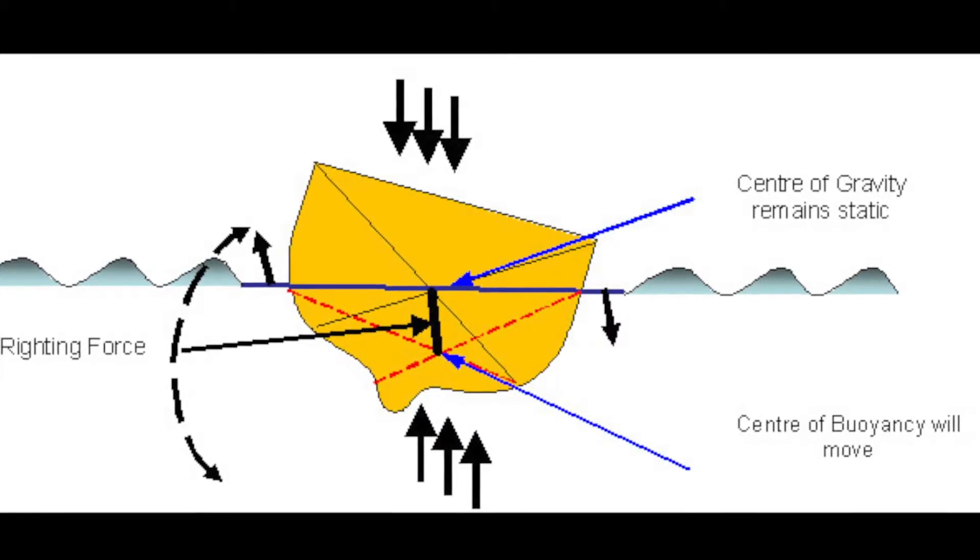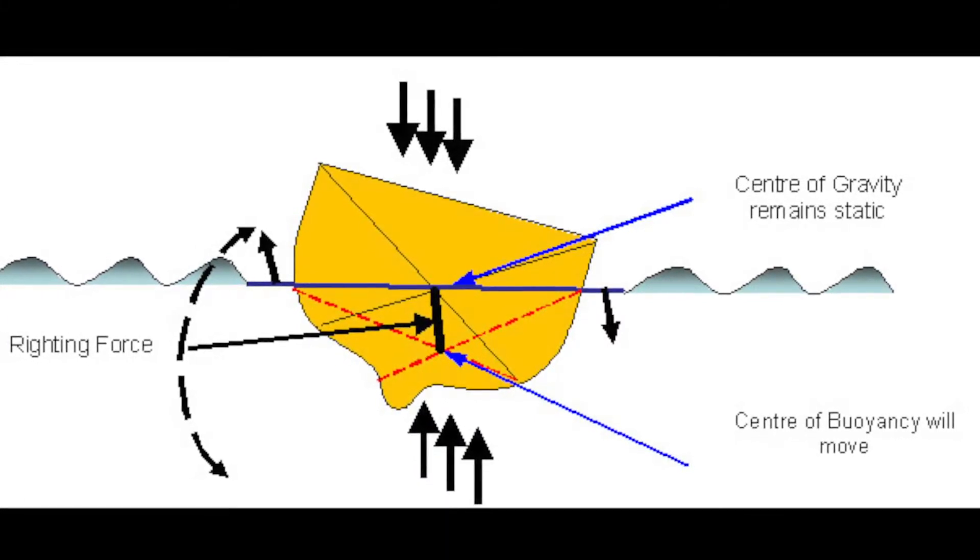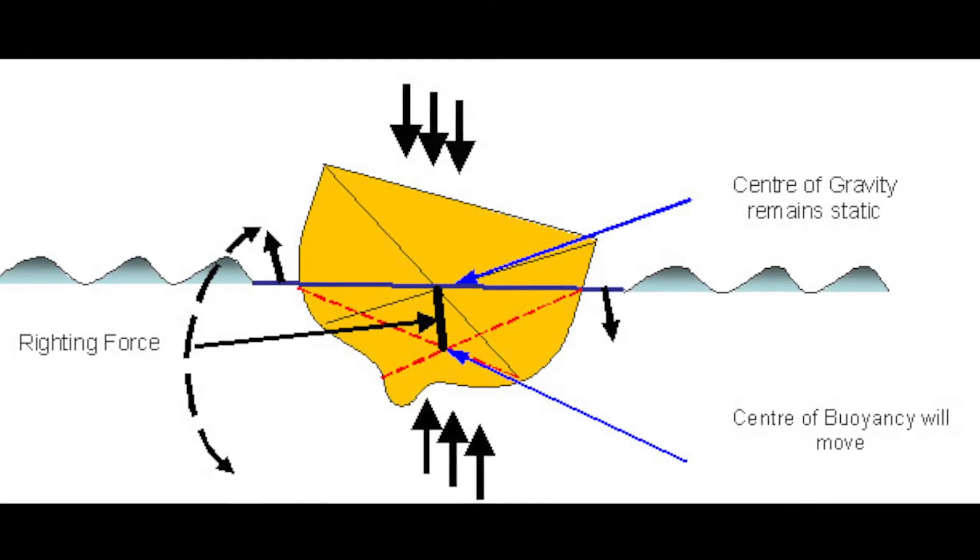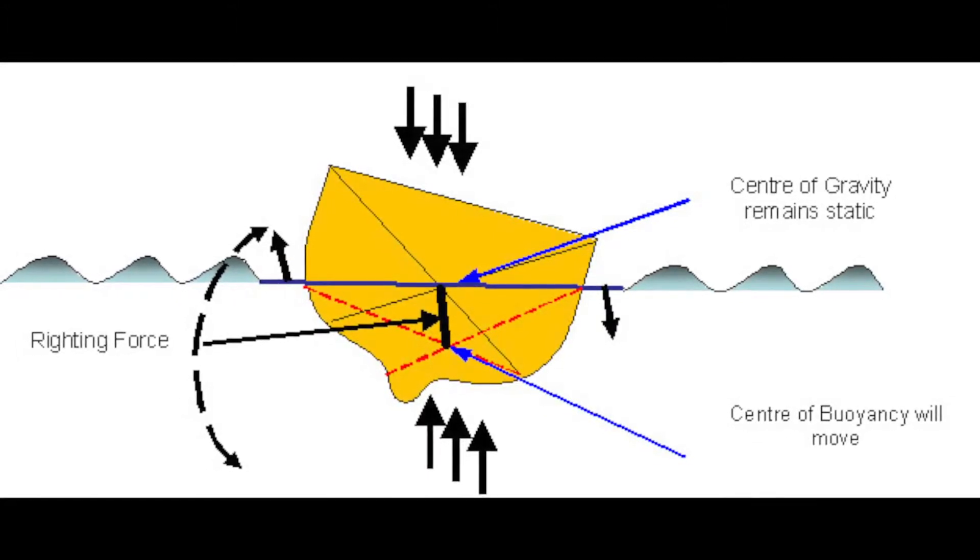Our hypothesis was that the knarr would be more stable than the longboat because its greater width and more rectangular hull shape would provide a stronger righting force than that of the longboat.